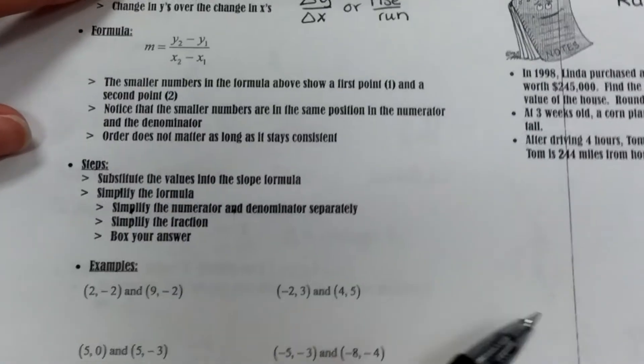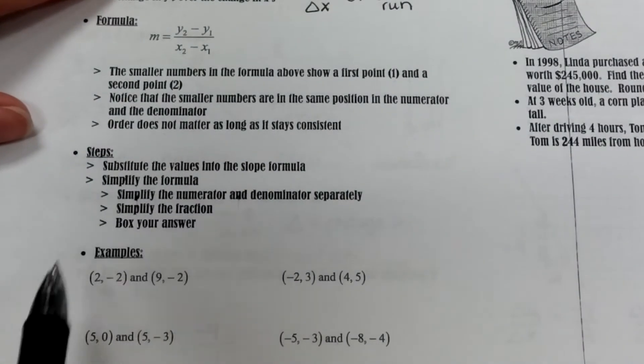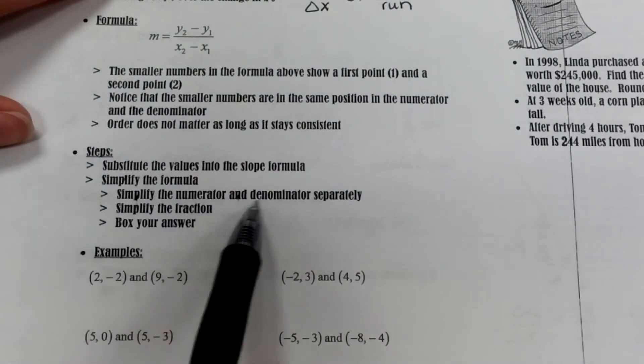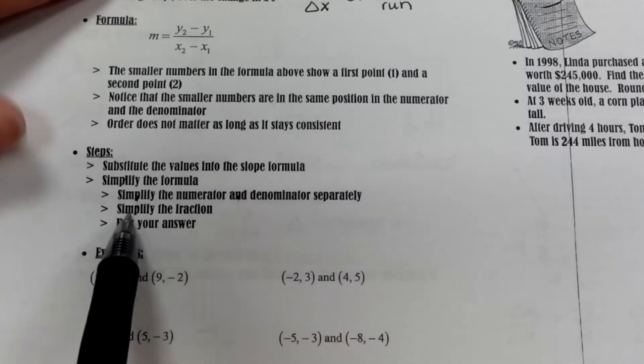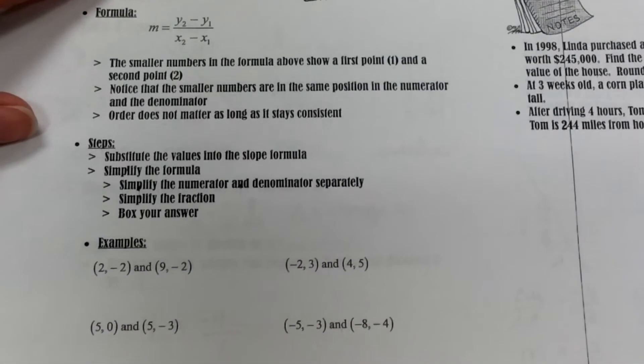So here are the steps. Number one: substitute the values into the slope formula. Two: simplify the formula. You have to simplify the numerator and denominator separately. Then you simplify the fraction, and it's always a good idea to box your answer.